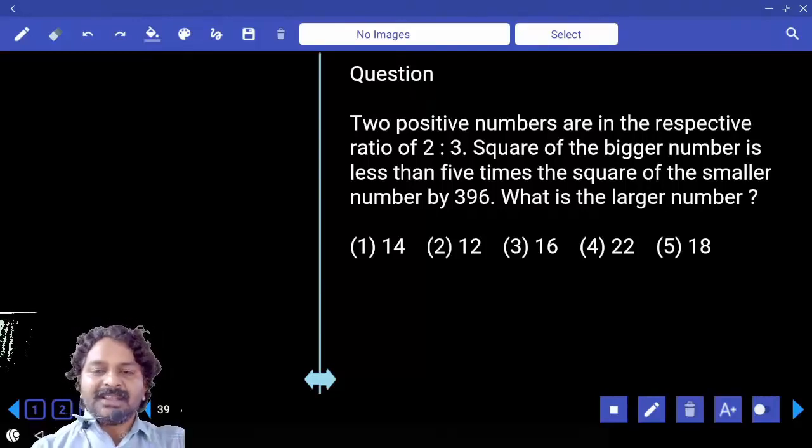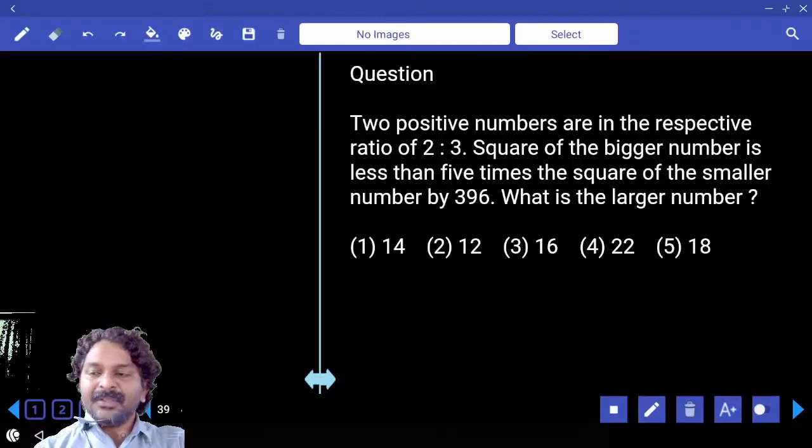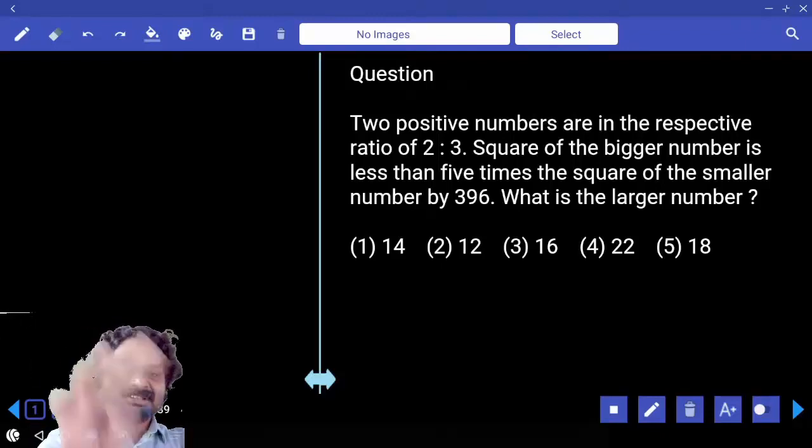Two positive numbers are in the respective ratio of 2:3. Square of the bigger number is less than 5 times the smaller number by 396. What is the larger number?